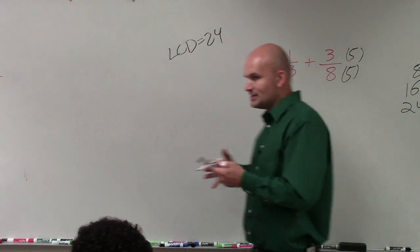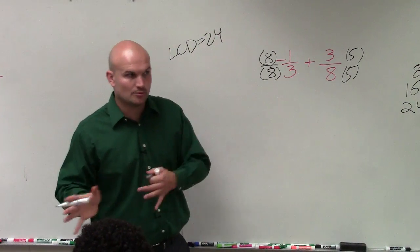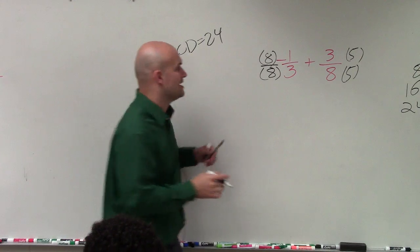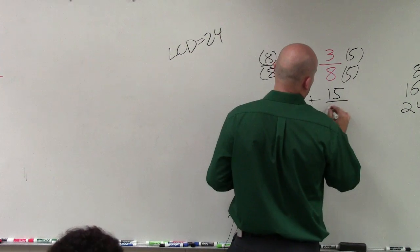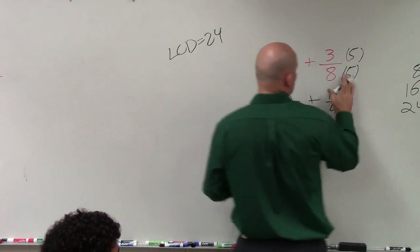And then, when I multiply fractions, I just simply multiply across. Numerator times numerator, denominator times denominator. Therefore, I get negative 8 over 24 plus 3, right?